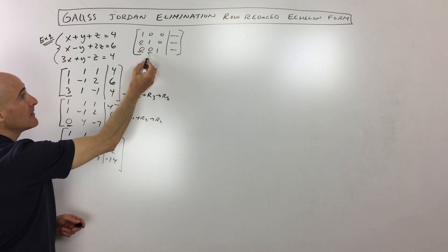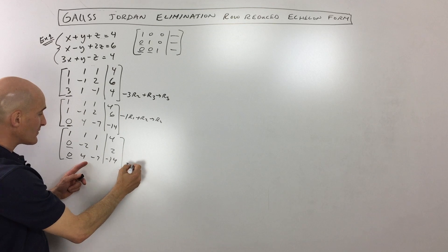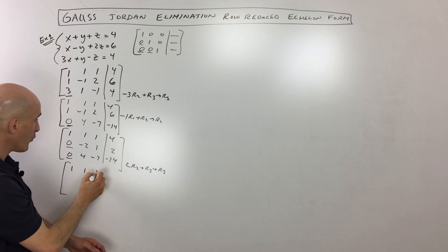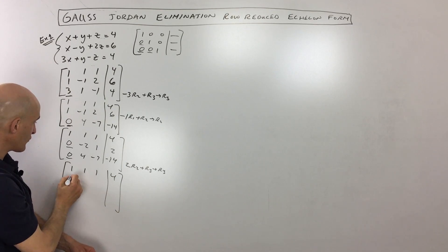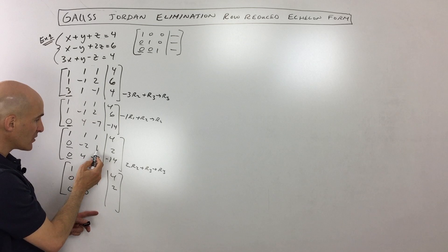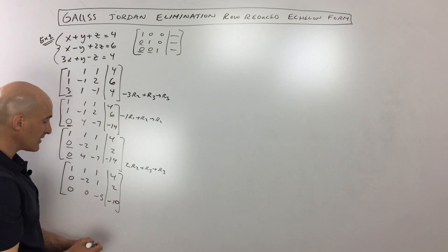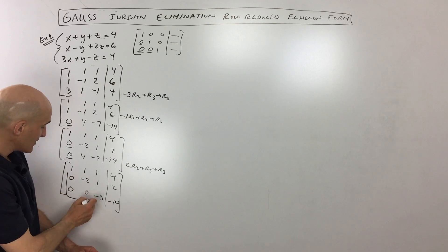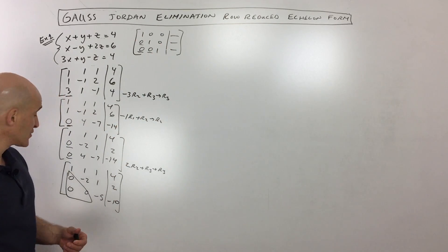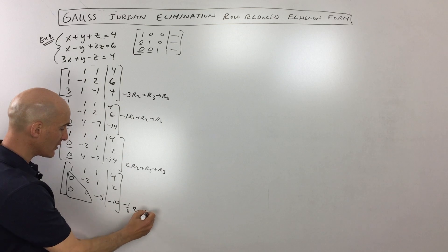Now I want to get 0 here. So I'm going to combine the second and the third rows: 2 times row 2 plus row 3, answer in row 3. Row 1 stays as 1, 1, 1, 4. Row 2 stays the same. For the bottom row, 2 times negative 2 plus 4 is 0; 2 times 1 is 2 plus negative 7 is negative 5; 2 times 2 is 4 plus negative 14 is negative 10. So now we've got zeros in this lower left-hand corner. Next we want zeros in the upper right and 1s on the diagonal. Let's multiply this third row by negative 1 fifth — answer in row 3. That gives us 0, 0, 1, and 2.